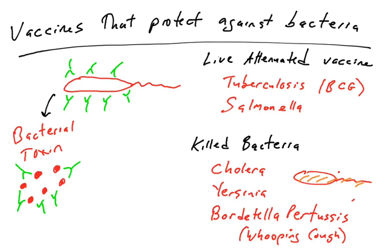A killed bacterial vaccine also exists for Yersinia pestis, which is the causative agent of the plague. And lastly, there is a vaccine for Bordetella pertussis, the bacteria that promotes whooping cough, although there's actually a more common vaccine for Bordetella pertussis made using a different mechanism.